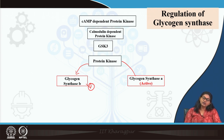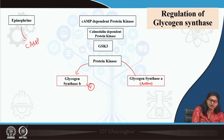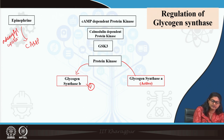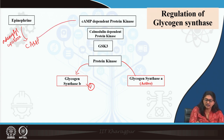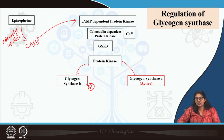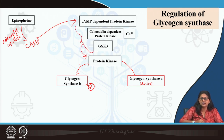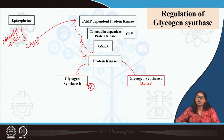Cyclic AMP-dependent protein kinase is activated by epinephrine via cyclic AMP formation. Cyclic AMP is formed by adenylyl cyclase, and that cyclic AMP causes activation of cyclic AMP-dependent protein kinase. Similarly, calmodulin-dependent protein kinase is activated by calcium. Here we will discuss glycogen synthase kinase-induced regulation of glycogen synthase. These are all examples of protein kinases that cause deactivation of glycogen synthase.